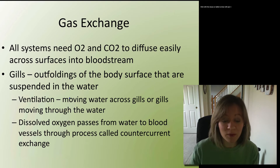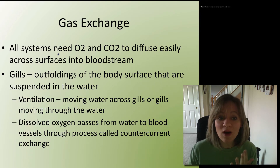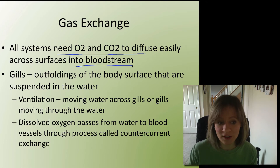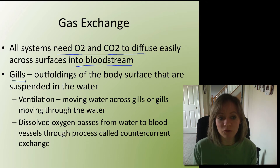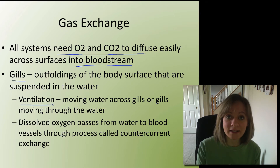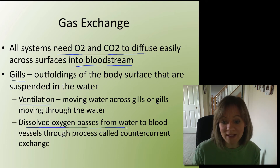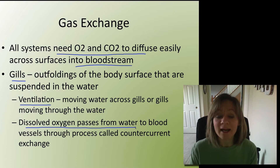What do we have in common — what's this common ancestor? Everybody needs to have oxygen and carbon dioxide diffused easily across a surface, and then it needs to get into the bloodstream. That's something very common between all systems. Let's take a closer look at aquatic animals. Gills are these outfoldings suspended in water, and fish need to ventilate them by moving water against the gills to get water to flow across. Then dissolved oxygen passes from the water to the blood through a process called counter-current exchange.